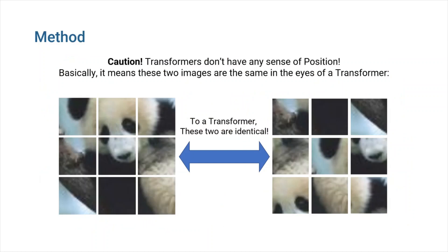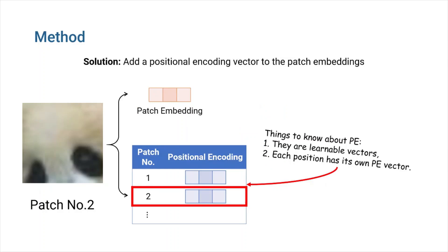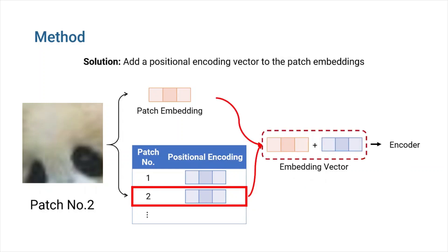But before we send these embeddings into the transformer encoder, we should consider the fact that transformer doesn't know anything about the order and position of its inputs. So, these two images in this slide are identical to a transformer. Therefore, we have to somehow inform our model about the position of each patch. Just like the original transformer, here we can simply add a positional encoding to our patch embedding to include spatial information. For each position, there is a learnable positional encoding vector. We add it to the patch embedding and send the results to the transformer encoder.